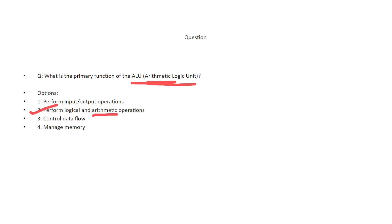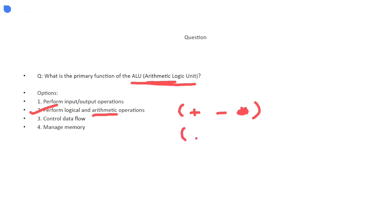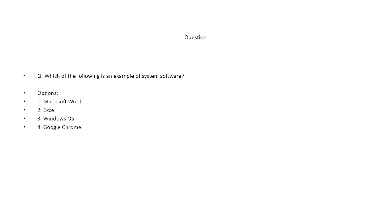The ALU is responsible for performing arithmetic and logical operations — arithmetic meaning addition and subtraction, and logical meaning AND and OR operations in programming.